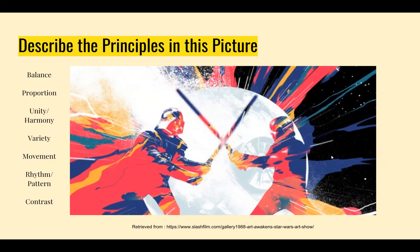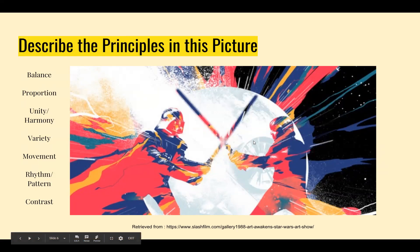Rhythm and pattern — when you're talking about pattern, an easy example is a tile floor with alternating black and white tiles. Patterns create rhythm, but you don't have to have a pattern to show rhythm. Rhythm can be shown in other ways — for example, there is a rhythm of lines radiating out from the sides of this image. Other than that, there are not very many patterns in this particular piece of artwork.